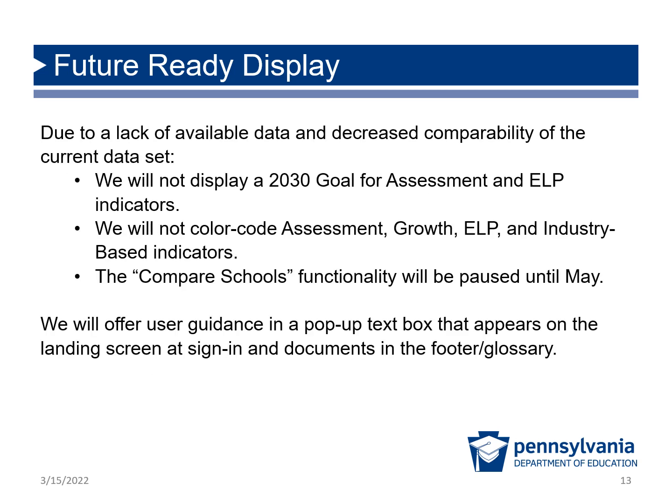Also, due to a lack of available data and decreased comparability, the following changes will be made. We will not display a 2030 goal for assessment-related indicators. It is not appropriate to benchmark progress from the last available data set, 2018-19, which is pre-pandemic test results. Without the goal, we cannot color code assessment and other listed indicators. The color coding is a result of a measurement of progress toward or against the 2030 goal that is no longer in effect. Also, the Compare Schools functionality will be paused until the growth data is released in May and a full dataset exists for each LEA with which to compare.